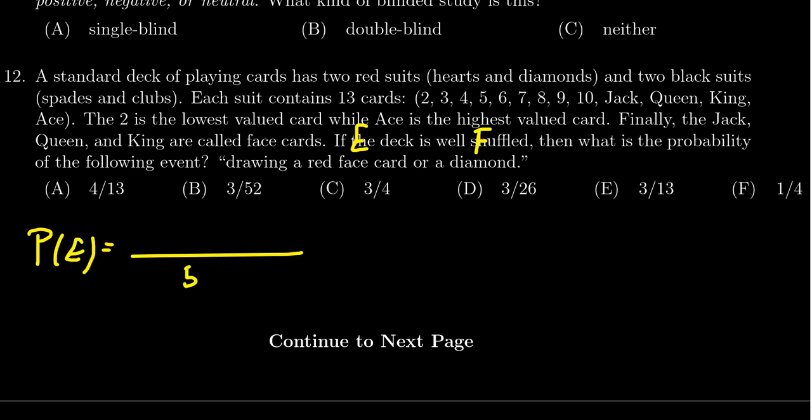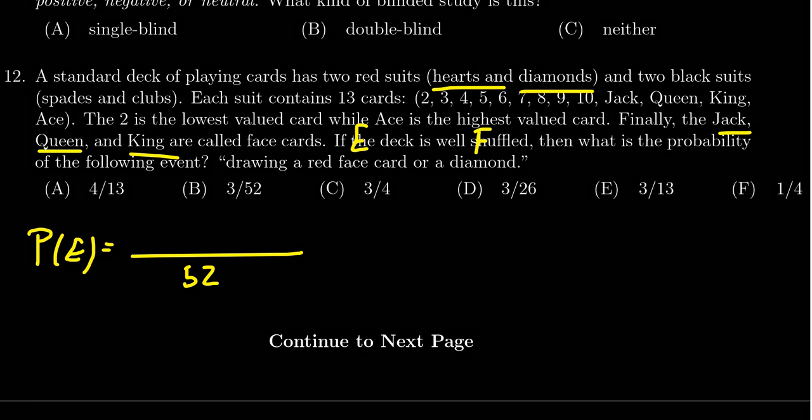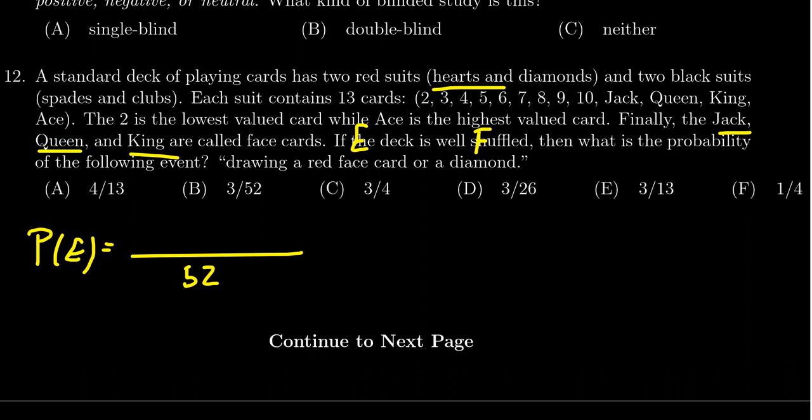If we're looking for a red face card, there are three face cards: the jack, the queen, and the king. Red has two suits that are red: there are hearts and there are diamonds. So the hearts have three face cards: the jack of hearts, the queen of hearts, the king of hearts. The diamonds also have three face cards: the jack of diamonds, the queen of diamonds, and the king of diamonds. As such, there are going to be six cards which are red face cards. So that's the probability of the first event happening.